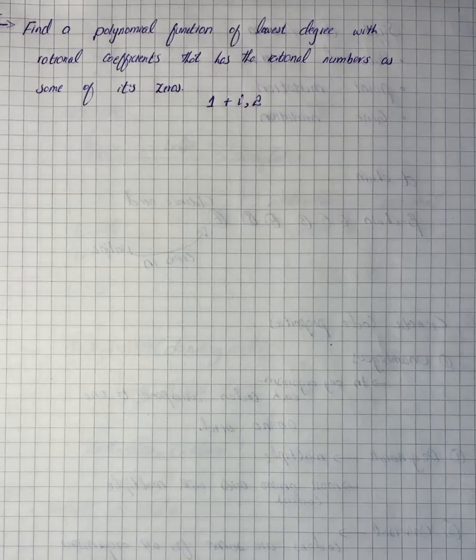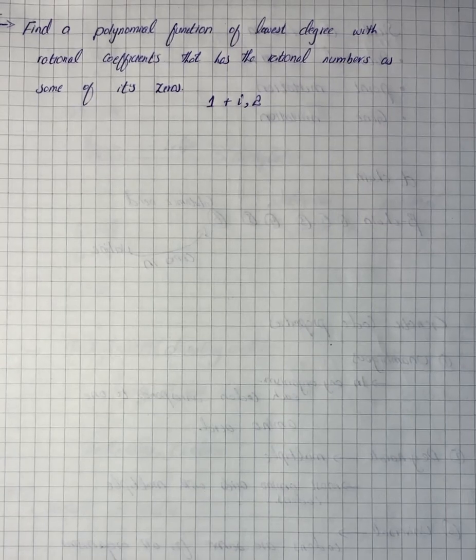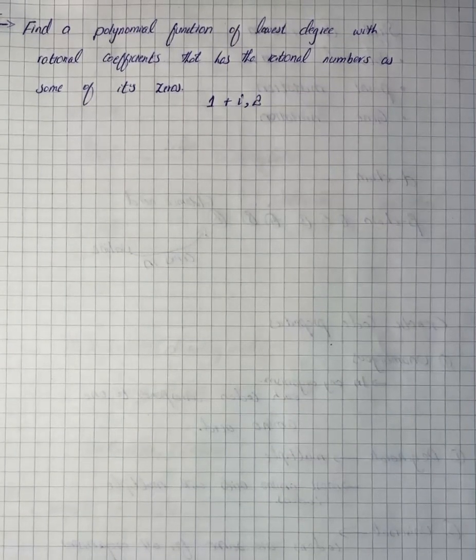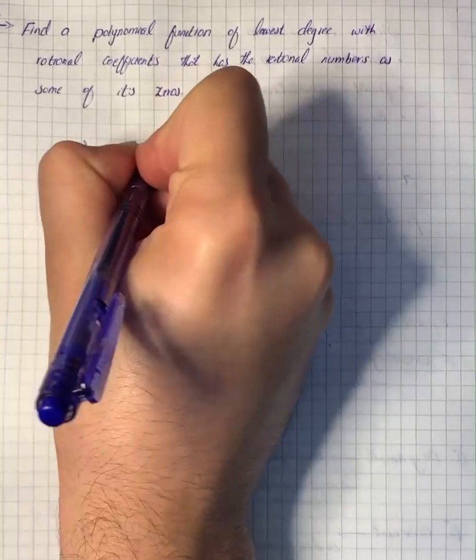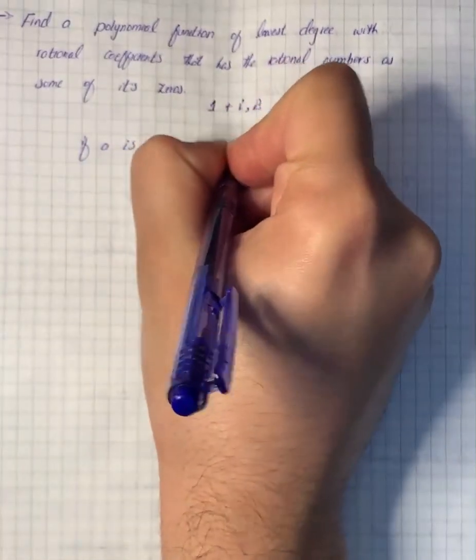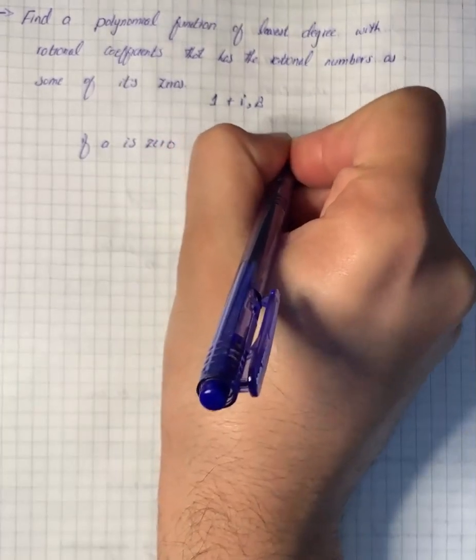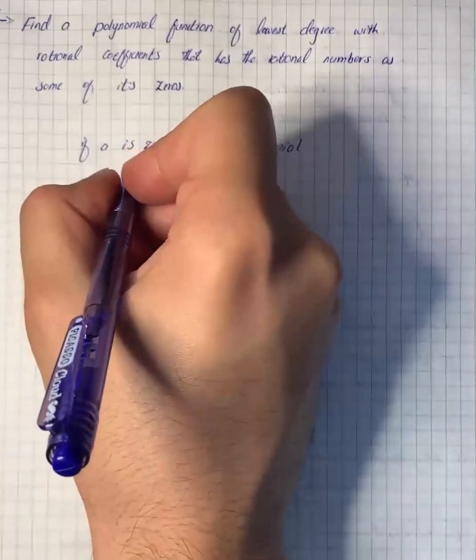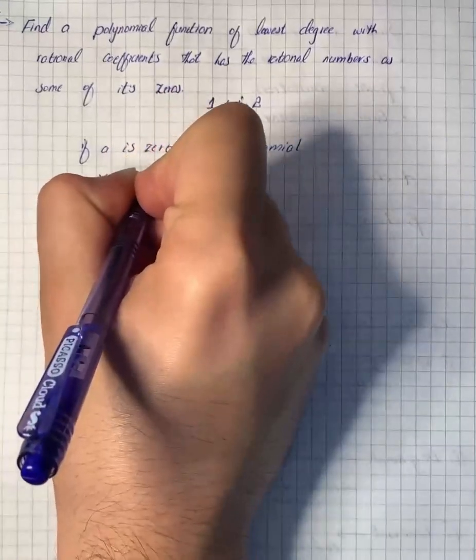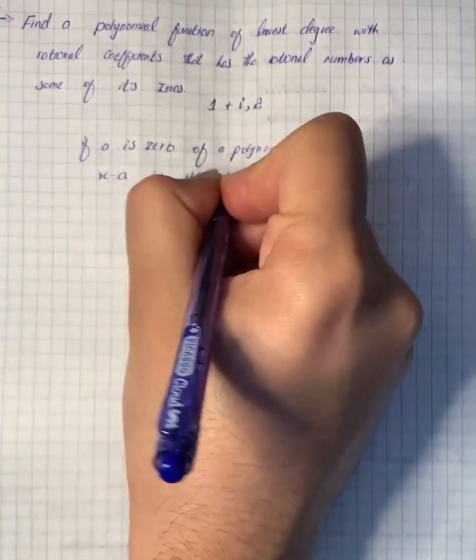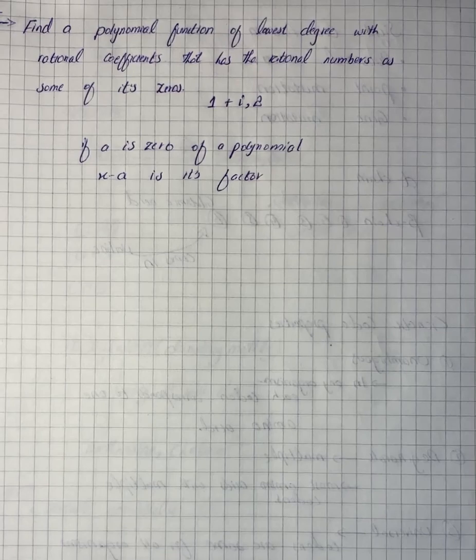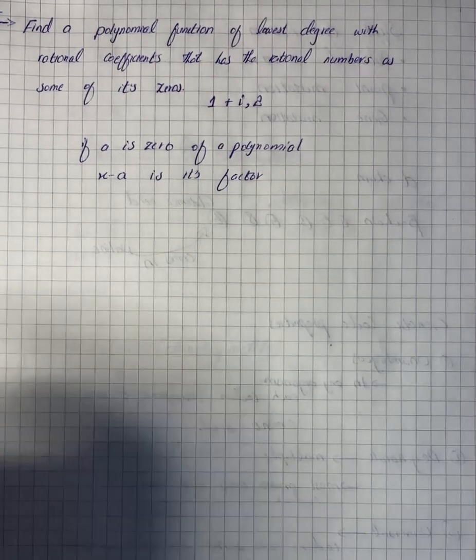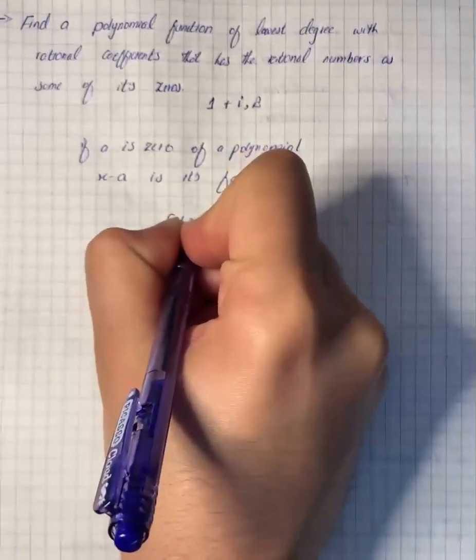Given that 1 plus i is a zero, if a is a zero of a polynomial function, then x minus a is one of its factors. So using 2 and 1 plus i and 1 minus i, the least possible degree of the polynomial function is 3. We can write that f(x) equals a times (x minus 2) times (x minus (1 plus i)) times (x minus (1 minus i)).